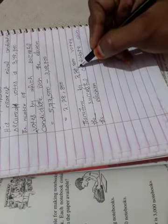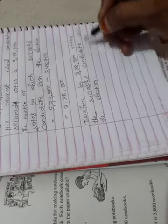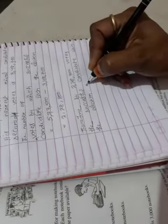Therefore, by 2,28,800 votes, the successful candidate win the election. Answer.